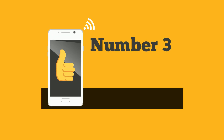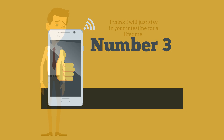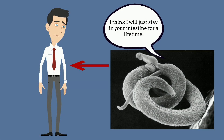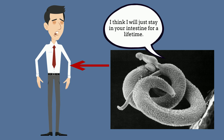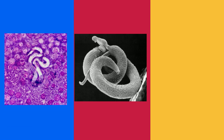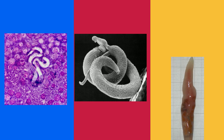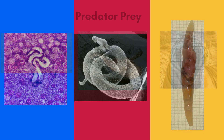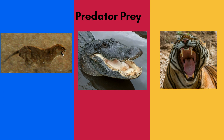Number three, sometimes the parasite will live their entire life inside the host. Endoparasites live inside the host. Examples include heartworms, tapeworms, and flatworms. This does not happen in a predator-prey interaction.